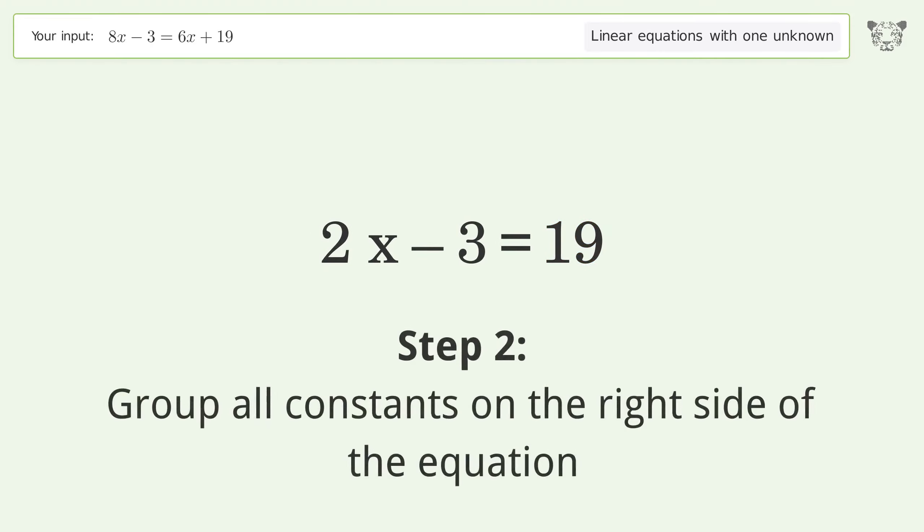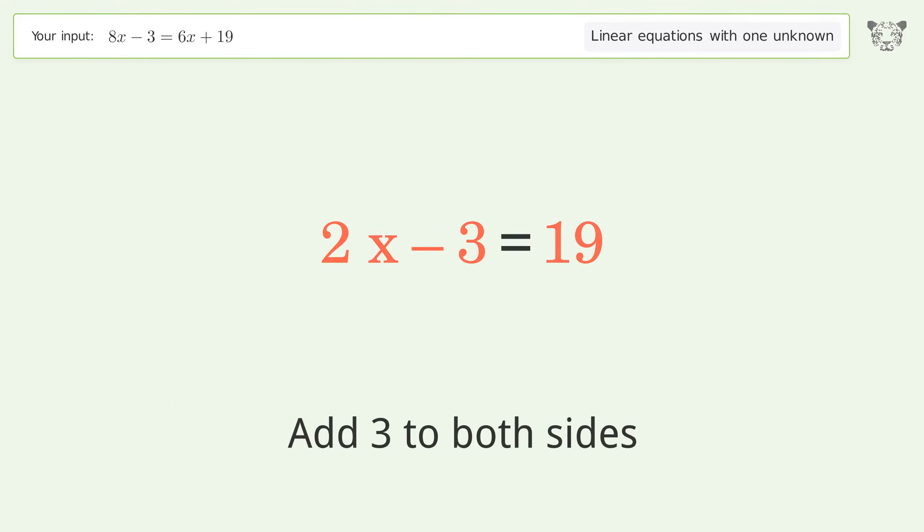Group all constants on the right side of the equation. Add 3 to both sides. Simplify the arithmetic.